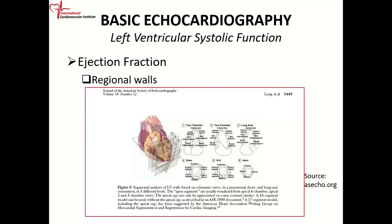So we have six segments at the mid-cavity level. At the base of the heart, where you have the mitral valve, we also divide it into six segments. We have the anterior on top and the inferior at the bottom. The lateral wall is again divided into two segments: the inferior lateral and the anterior lateral. The septum is likewise divided into two segments: the inferior septum and the anterior septum.